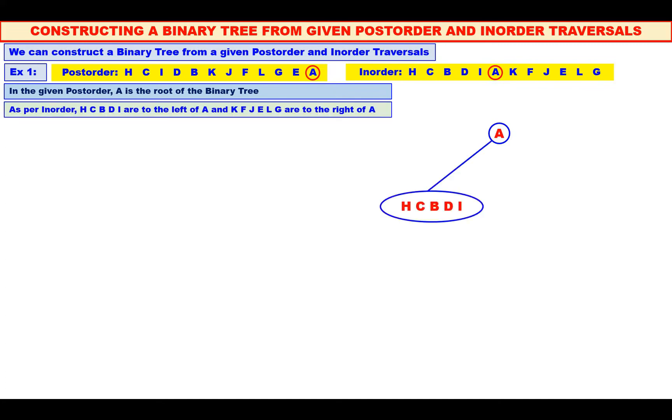Therefore, H, C, B, D, I are in the left sub-tree, and K, F, J, E, L, G are in the right sub-tree.